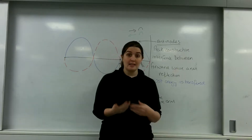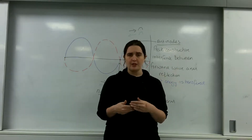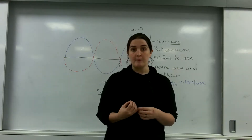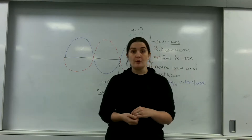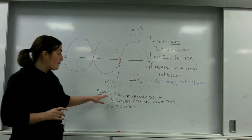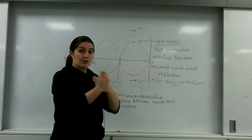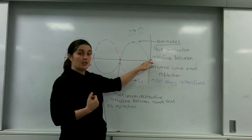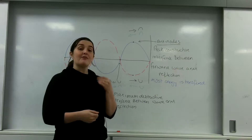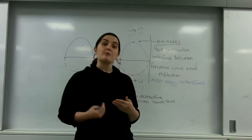In my previous video I spoke about how standing waves are produced, and it's all to do with a wave interfering with its reflection. Now that only happens at specific frequencies. It's very important that when a standing wave is produced, a node — a point where maximum destructive interference between the wave and its reflection occurs — is at the point of return. So the point of reflection at the wall must be a node, a nodal point. If it is not, you have not reached a point where you will have a standing wave; the frequency must change.